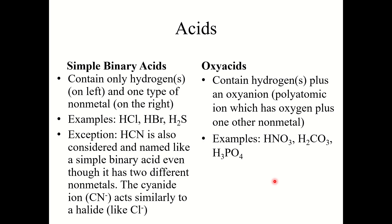Now let's talk about acids. Within acids there are two classes: simple binary acids and oxy acids. It's important you understand the difference because they are named slightly differently. Binary acids contain only hydrogen and one type of nonmetal — for example HCl, HBr, H2S. These are binary acids because there's hydrogen on the left and one type of nonmetal on the right.